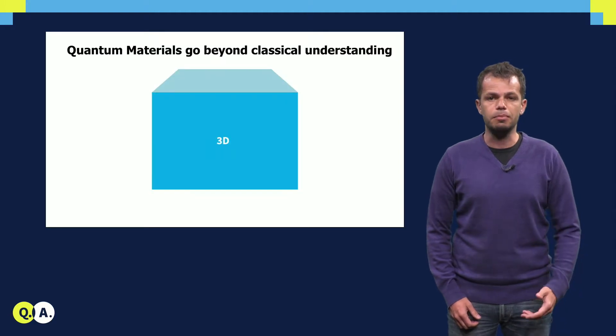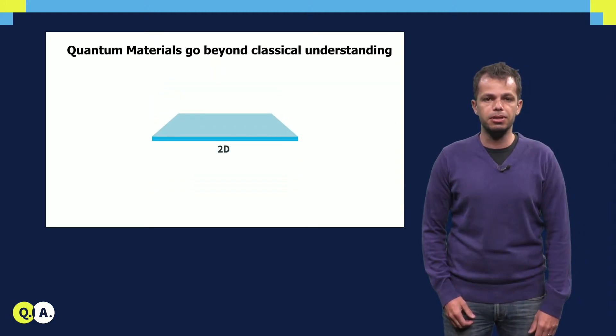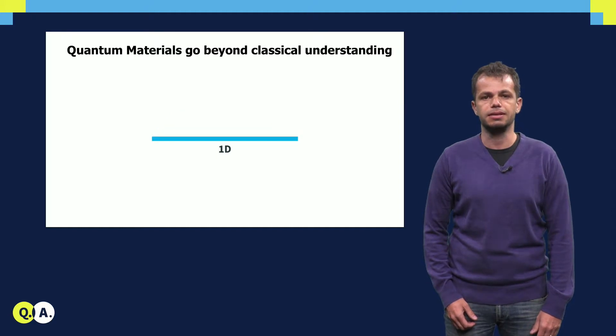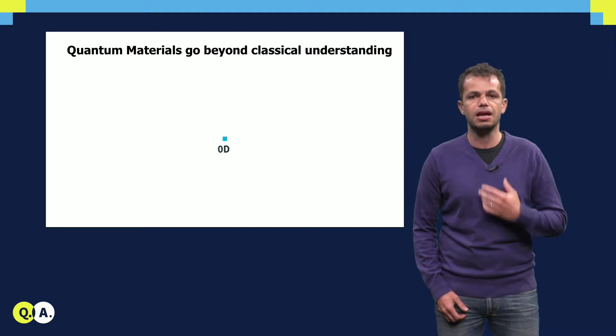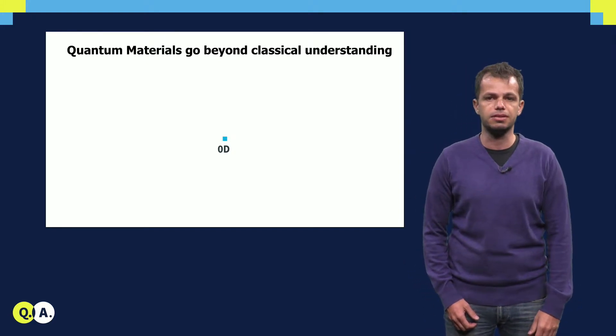For example, many quantum materials derive their properties from reduced dimensionality. Electrons trapped in two, one or zero dimensions have different characteristics than electrons in 3D.